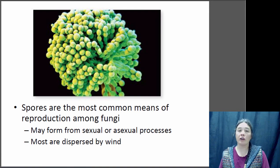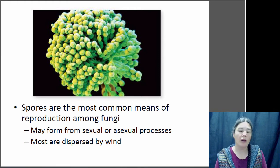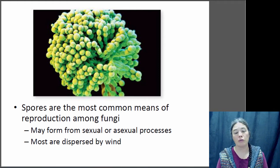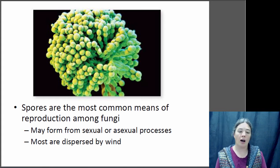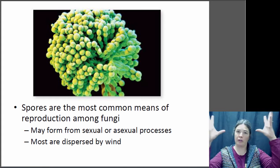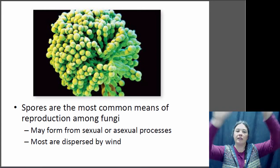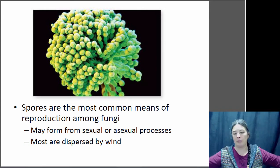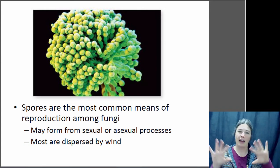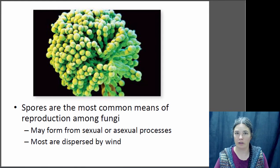Most fungi reproduce by the use of spores. Spores can be produced either through sexual or asexual reproduction. Most of them are dispersed by the wind — fungal spores float around in the air all the time, then settle into different places, and if the habitat is favorable, a new fungus can grow there.